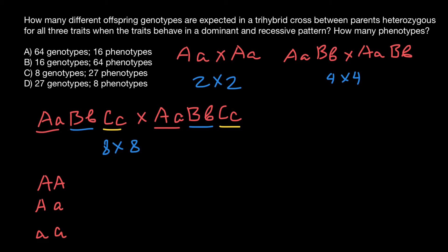For gene B we see the same picture — progeny may inherit two dominant B alleles, one dominant and one recessive, or two recessive alleles. And the same is true for gene C: progeny can inherit two dominant alleles, one dominant and one recessive, or two recessive alleles.